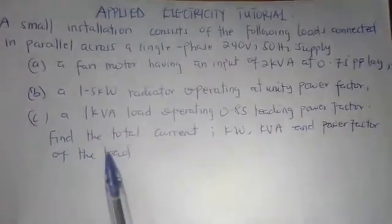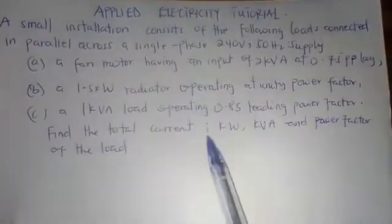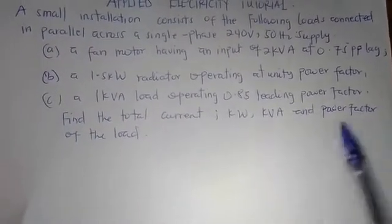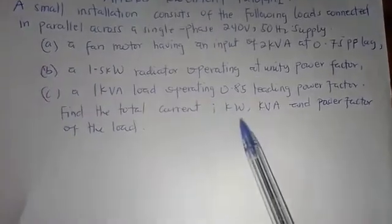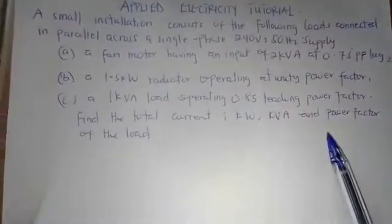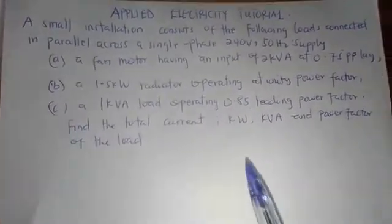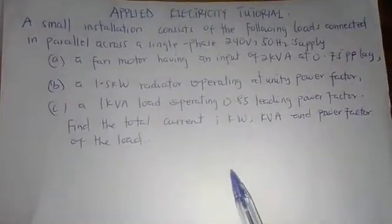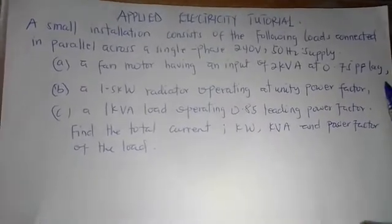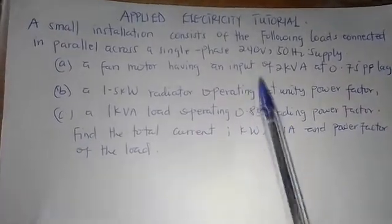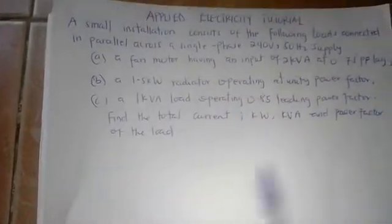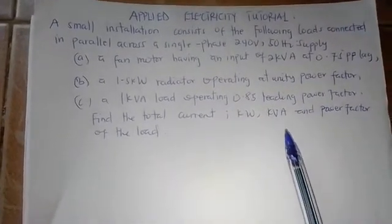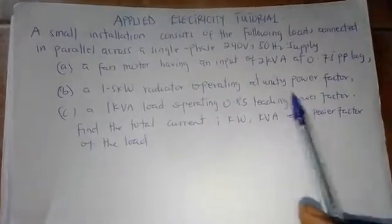Finally, a 1 kilovolt-ampere load operating at 0.85 leading power factor. We need to find: the total current, the total kilowatts, the total KVA, and the power factor of the load. Key things to note: one load has lagging power factor, another has leading, and we are dealing with a single-phase system — not a three-phase system.